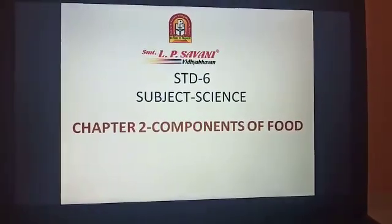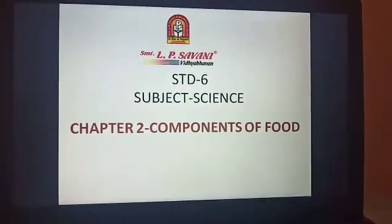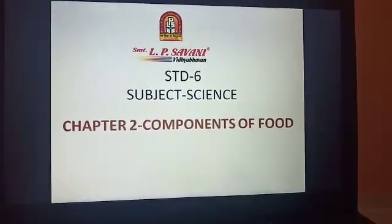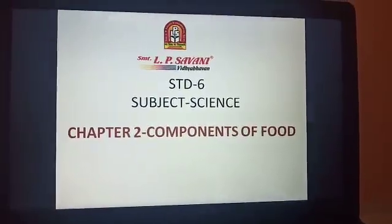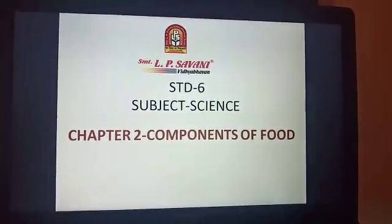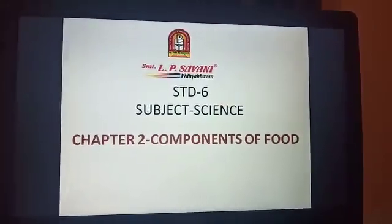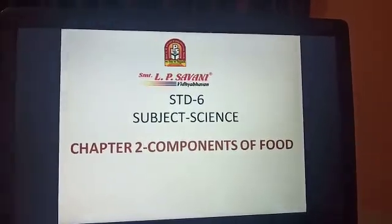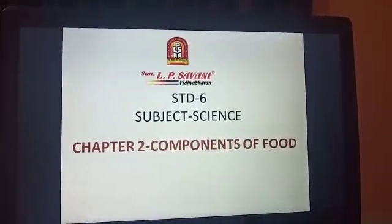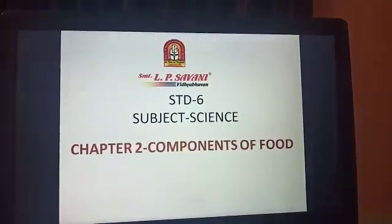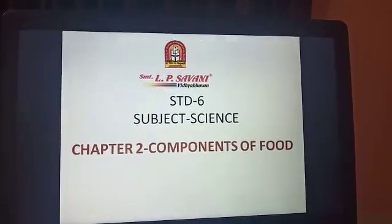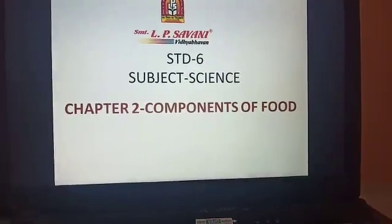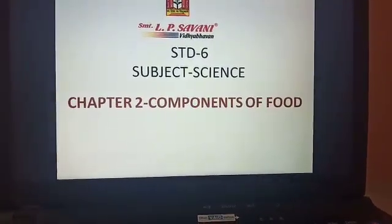Good morning students, myself Remya. Hope you all are doing good and have watched the video of chapter 1, that is food of subject science. In chapter 1 I discussed about the importance of food, different variety of food materials and also sources of food materials. I also discussed the different parts of the plant that we can eat and we categorized animals into three groups according to what they eat: herbivores, carnivores and omnivores.